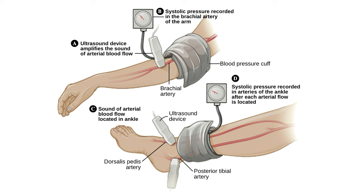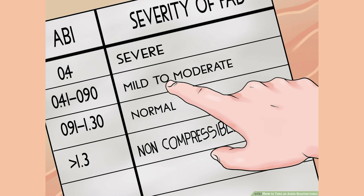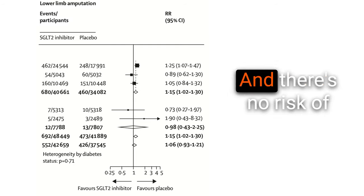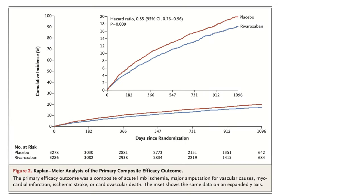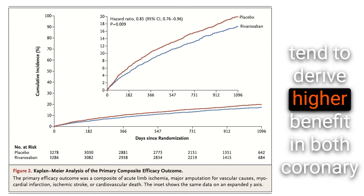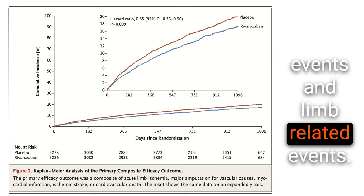The most handy screening tool is the ankle-brachial index, keeping in mind that its accuracy is lower in patients with diabetes because of calcification and non-compressible vessels. Regardless of lower extremity arterial disease, an abnormal ankle-brachial index means increased risk of cardiovascular events. Medical management of lower extremity arterial disease in patients with diabetes includes SGLT2 inhibitors and GLP-1 receptor agonists — there is no risk of amputation with empagliflozin or dapagliflozin. Rivaroxaban 2.5 mg twice daily, when added to aspirin, reduces major adverse cardiac events and also major adverse limb events including amputations, with patients with peripheral arterial disease deriving particularly high benefit in both coronary and limb-related events.